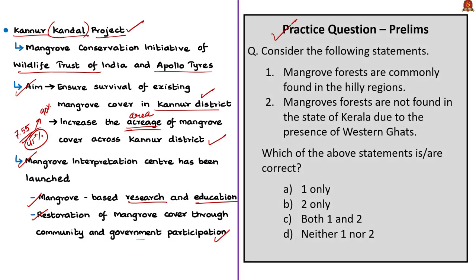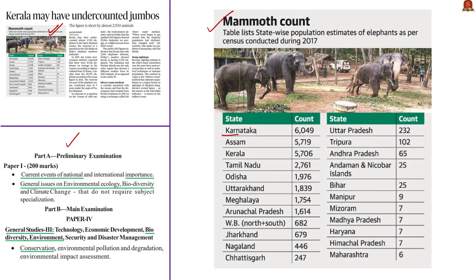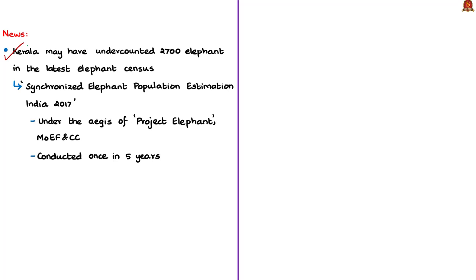Moving on to the next article, which is about elephant senses. Karnataka has the largest population of elephants, followed by Assam, Kerala and Tamil Nadu. Elephants are also present in Andaman and Nicobar Islands. The news article mentions that Kerala may have undercounted almost 2,700 elephants in the latest elephant census. The Ministry of Environment, Forest and Climate Change updated the figures of the 2017 elephant census and found that Kerala had undercounted almost 2,700 elephants.